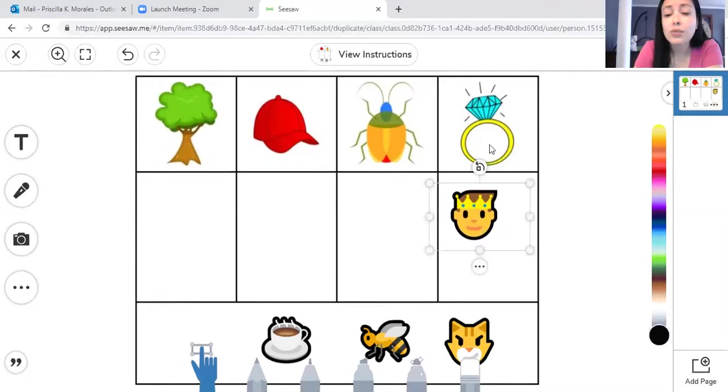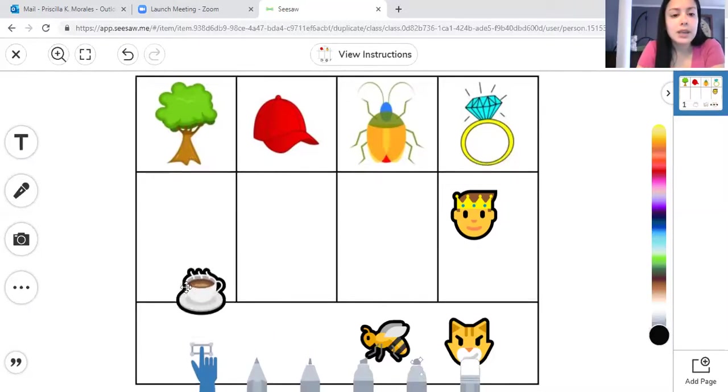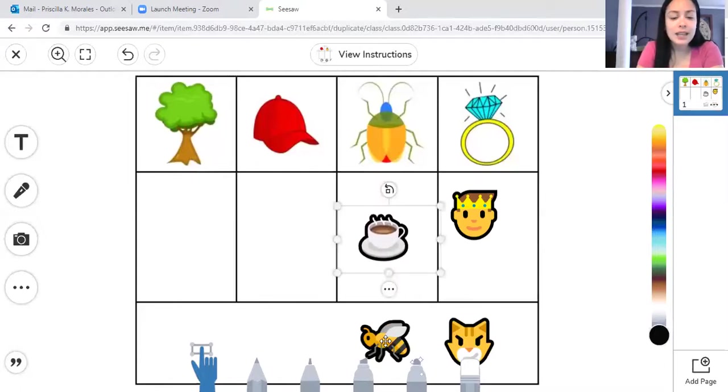Let's go to the next one. Mug is a bug. Mug, tree? Mug, hat? Or mug, bug? Which one rhymes? What has the same ending sound? Mug, tree? Mug, hat? Mug, mug, mug, bug. Yep! Mug, bug—they rhyme.